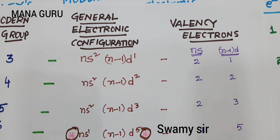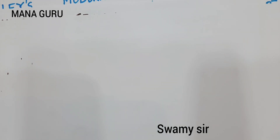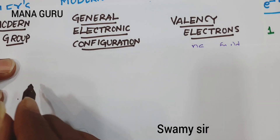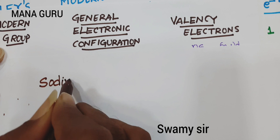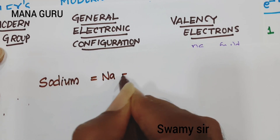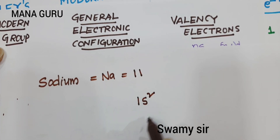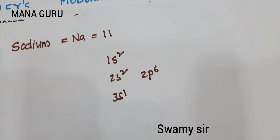Students, if you are liking my video, please subscribe and share with your circle. Come to example number one. Take sodium. What is the atomic number for sodium? It is 11. So write its configuration: 1s2, 2s2, 2p6, 3s1. This is the electronic configuration for sodium.